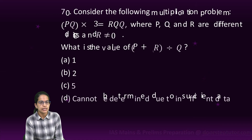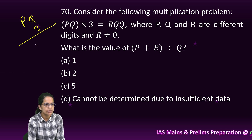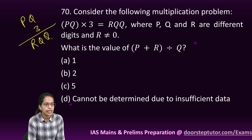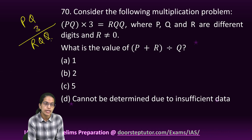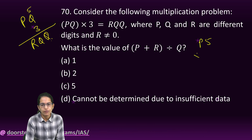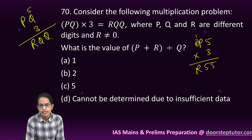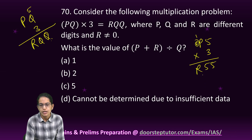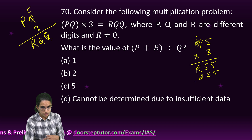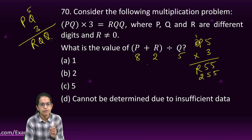The next question: PQ × 3 = RQQ. For the last digit to stay Q when multiplied by 3, Q must be 5. So P5 × 3 = R55. Working out: 5 × 3 = 15, carry 1; P × 3 + 1 gives last digit 5 and a carry for R. If P = 8: 8 × 3 = 24, plus 1 = 25, so R = 2 and the number is 255. Values: P = 8, R = 2, Q = 5; so (P + R + Q) / Q = 15 / 5 = ... giving 2 as the right answer.